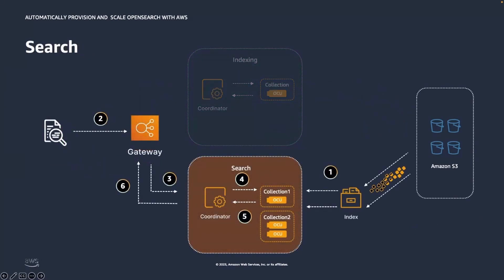On the search side, OpenSearch Serverless functions with two search replicas running in active-active mode. When you perform a search, the gateway checks permissions and the coordinator routes the request to the search compute units holding the queried data. The indices will be hydrated from S3 to the search compute unit — downloading index data directly from S3 if not already cached locally. It then runs the search operation, performs aggregations, and returns the response.